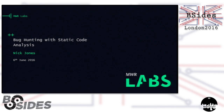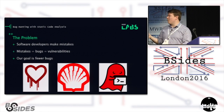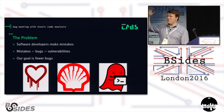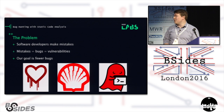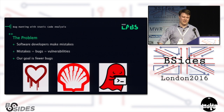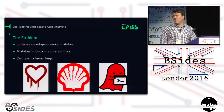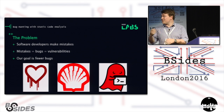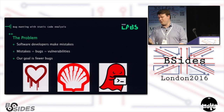Today I'm going to be talking about hunting for bugs with static code analysis. Let's look at the problem — why we're here and what we care about. Software developers are human, they make mistakes, they screw up, and there's been quite a lot of that lately. We've got Heartbleed, Shellshock, the Ghost Glibc bug was pretty bad too. Mistakes mean bugs, bugs mean vulnerabilities, and overall we want fewer bugs.